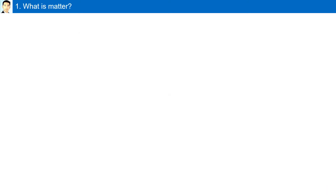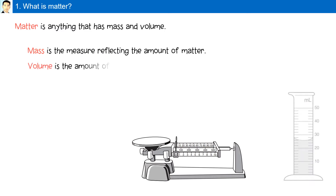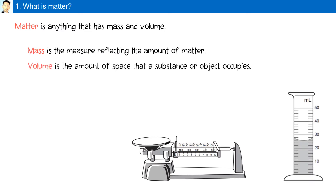What is matter? Matter is anything that has mass and volume. Mass is the measure reflecting the amount of matter, while volume is the amount of space that a substance or object occupies.